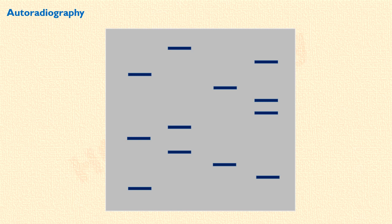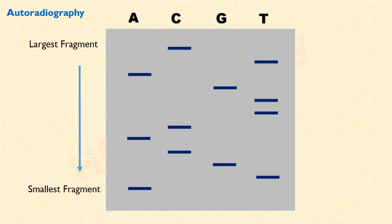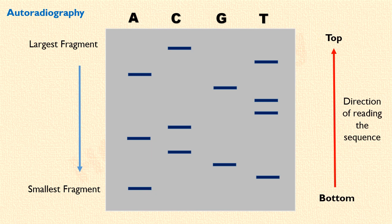Let's say this is the autoradiograph of the gel. We will label each lane according to the ddNTP with which the partial DNA fragments should end. Now let's understand the interpretation of DNA sequence. Bands are arranged according to their size. The smallest fragment is found at the bottom of the autoradiograph and the largest fragment is found at the top. We will read the sequence from bottom to top according to their increasing size. The shortest fragment is in the A-lane at the bottom. This shortest fragment means that deoxy ATP was added nearest to the 3' end of the primer.